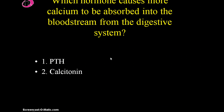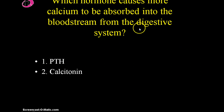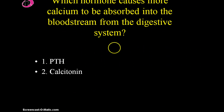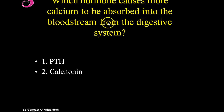Just a reminder: for this absorption to happen, you need not just parathyroid hormone but also vitamin D. Vitamin D allows parathyroid hormone to do its job and enables the absorption of calcium. The natural source of vitamin D is sunlight, and you can also take it in through your diet. Calcitonin, on the other hand, would decrease the amount of calcium absorbed from the digestive system, because calcitonin is secreted when blood calcium is already high, so you don't need more.